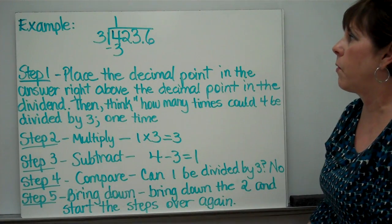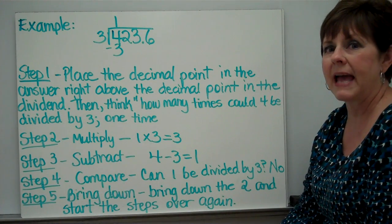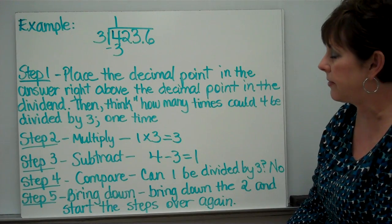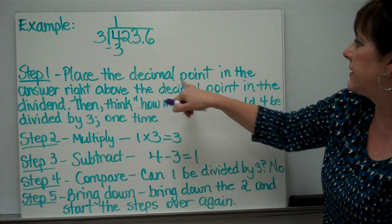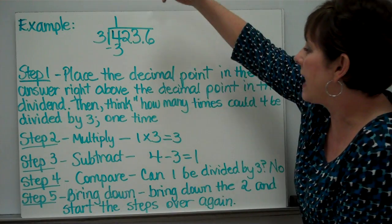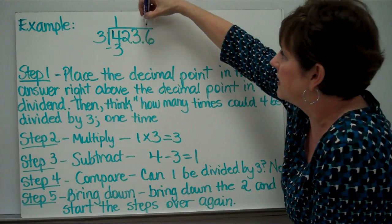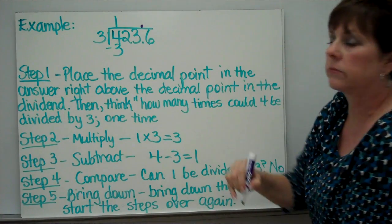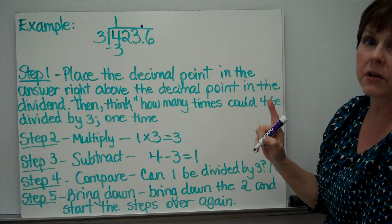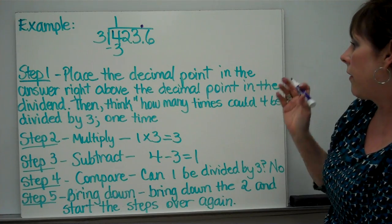Here's an example, 423.6 divided by 3. Step one: place the decimal point in the answer right above the decimal point in the dividend. So here it is here. I'm going to go ahead and put it here. That way I know it's going to be in the right place.